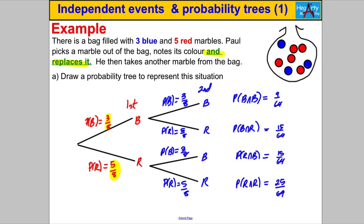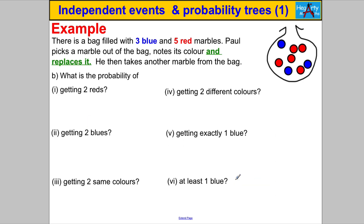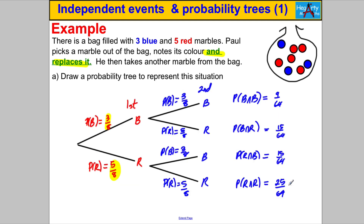We have drawn a fully labelled probability tree. Now that's not the end of the story — they go on and ask you some questions. But if you've labelled this up properly you should be able to answer anything they give you. So the first question: what's the probability of getting two reds? We've actually already done that — it is 25 out of 64.